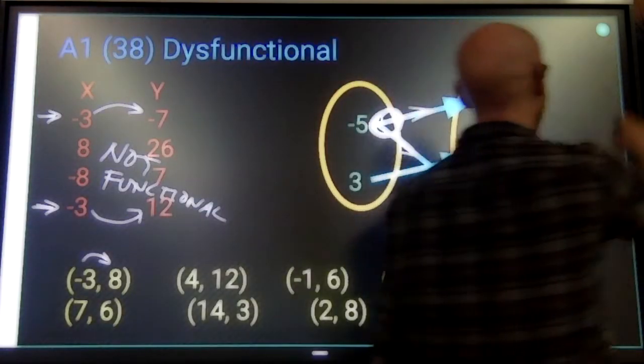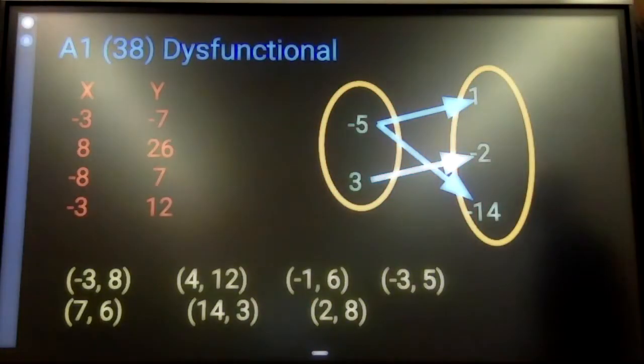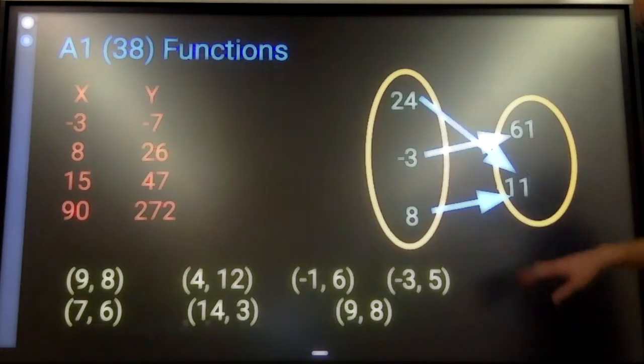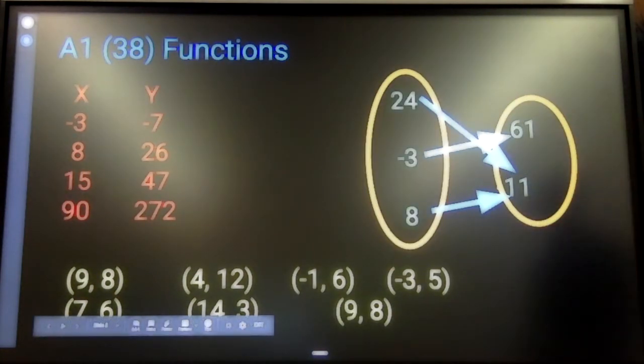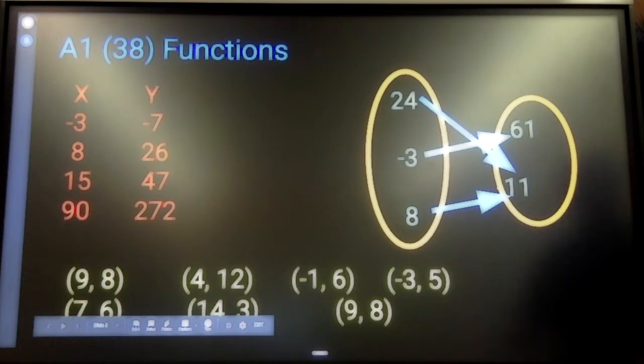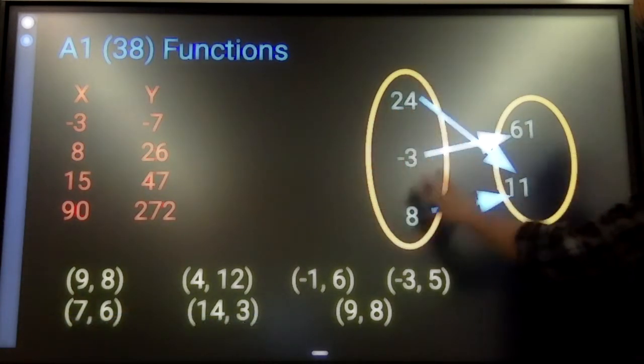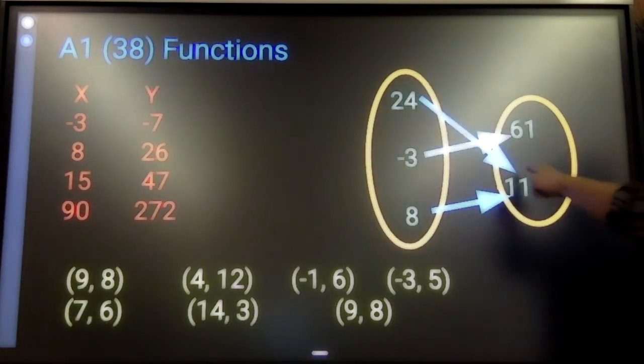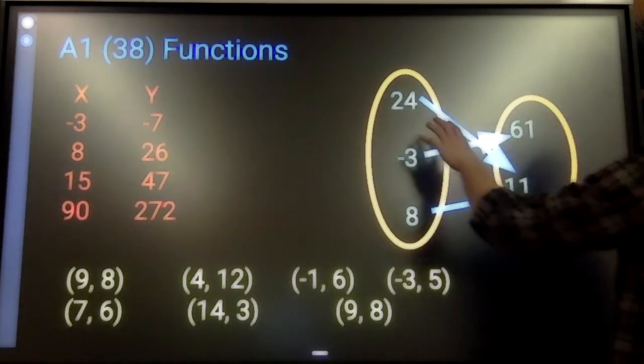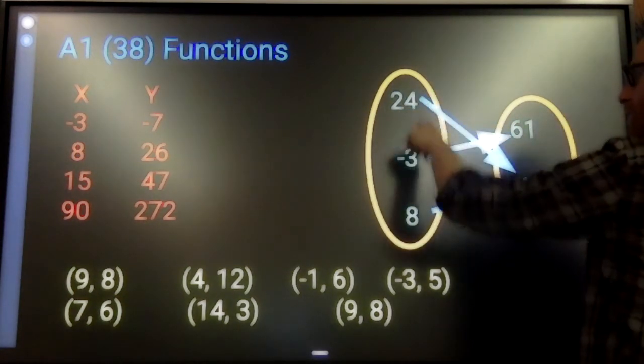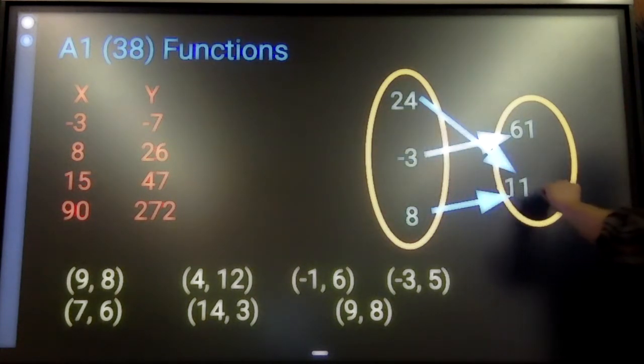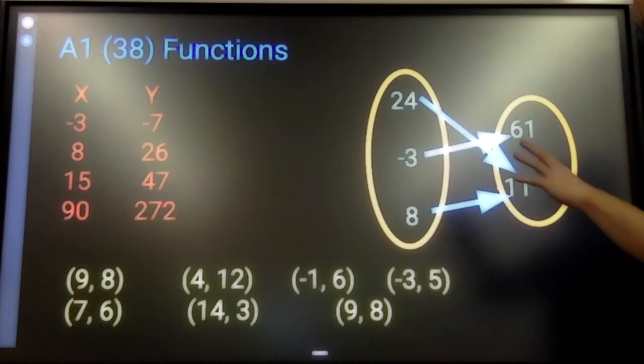Looking at the same contexts, functional relationships would look like this. Each input has only one arrow leaving from it. It's okay that both of these inputs lead to the same output. And that's what I was talking about before.